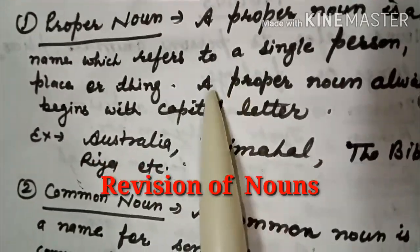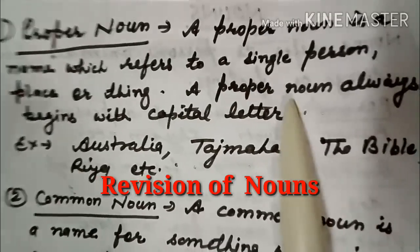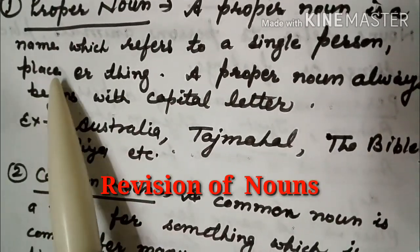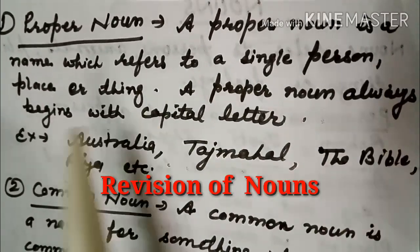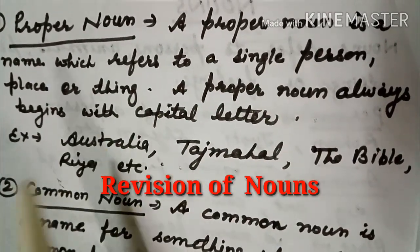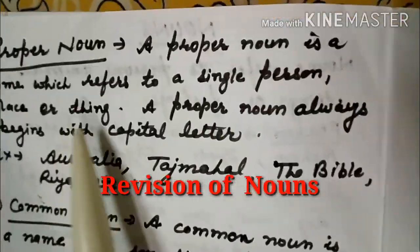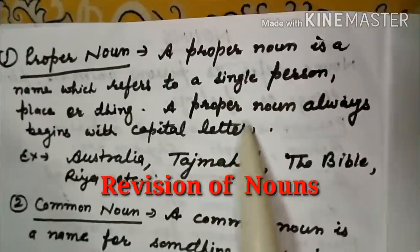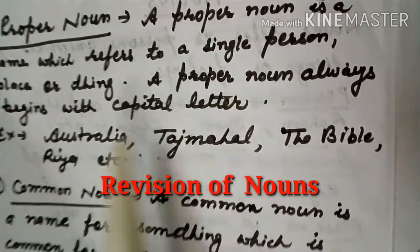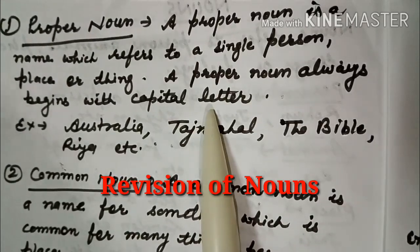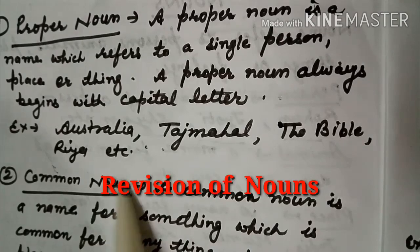First — proper noun. Proper noun, in Hindi, is called 'vyakti vachak sangya'. A proper noun is a name which refers to a single person, place, or thing. A proper noun always begins with a capital letter. For example: Australia, Taj Mahal, The Bible, Ria.